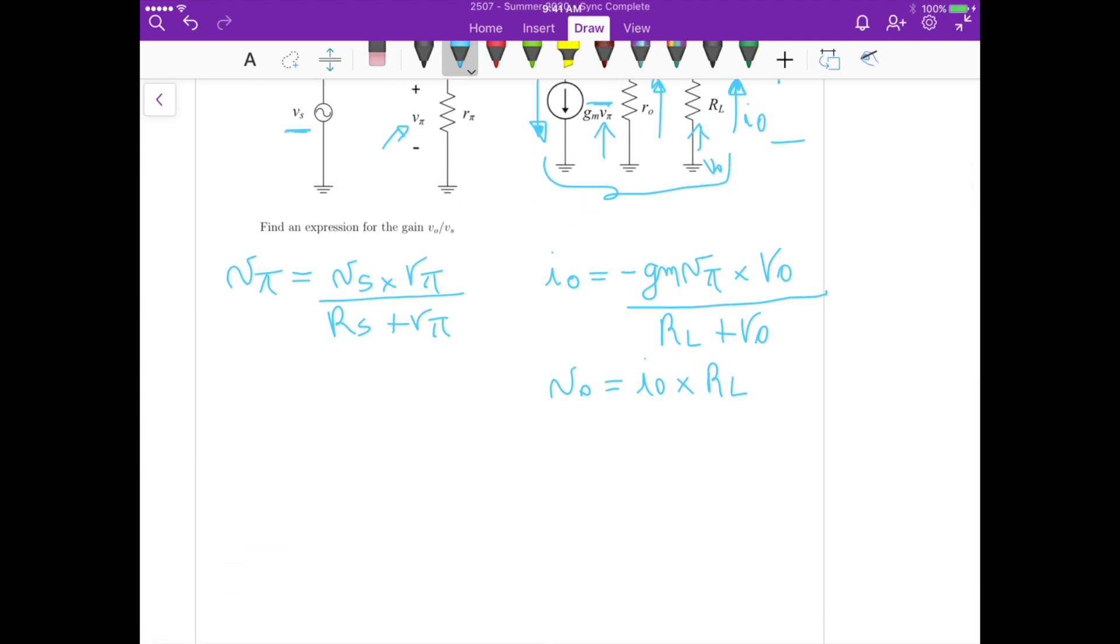So at the end, Vout equals I0, which is minus GM Vpi, times R0 times RL divided by RL plus R0. That's Vout. Now, because we know an equation for Vpi in terms of Vs, we just need to substitute it here and isolate Vout over Vs.